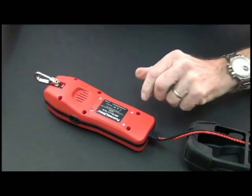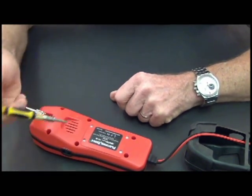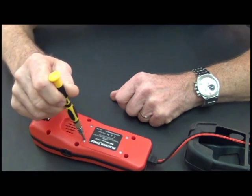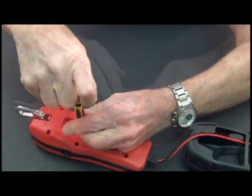Turn it over and now we can start to remove the screws. Be sure you use the right size Phillips bit to remove the door. So let's start removing it.